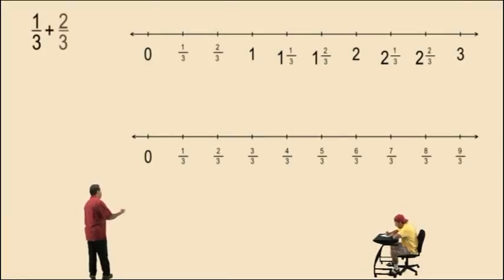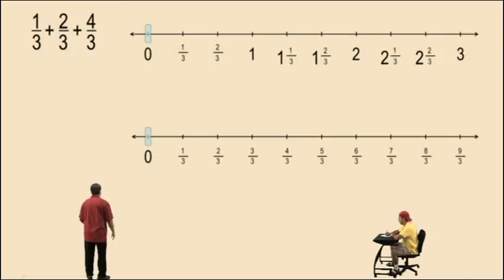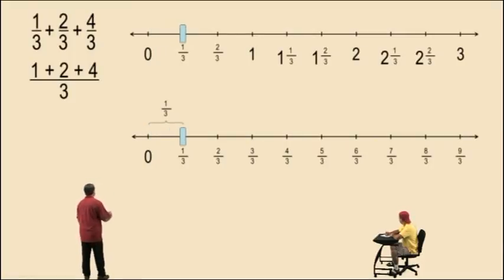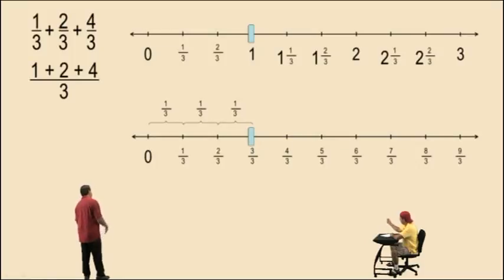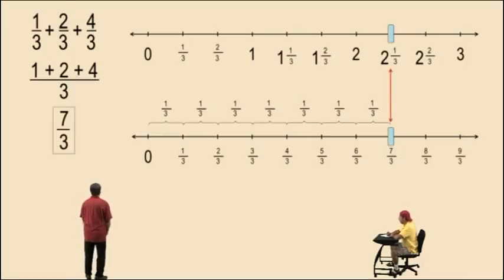1 third plus 2 thirds plus 4 thirds. Remember, we work with our numerators. Our denominator remains unchanged. So here we have 1 plus 2 plus 4 for our numerator and our denominator is 3. Let's perform our calculation: 1 third plus 2 more thirds is 3 thirds, and now we add 4 more thirds and that gives us 7 thirds. And that is our correct answer.